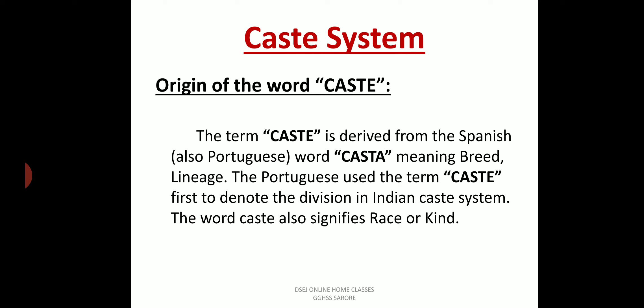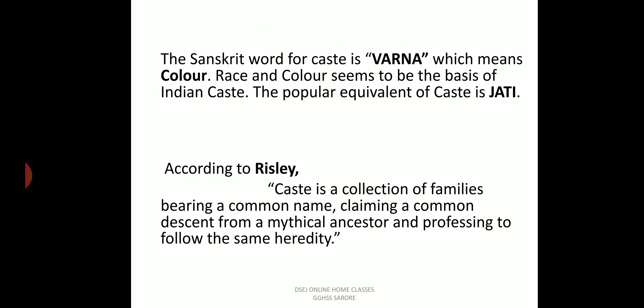The term 'caste' is derived from the Spanish word 'caste' meaning breed or lineage. The Portuguese used the term first to denote the divisions in the Indian caste system. The word 'caste' also signifies race or kind. The caste system is divided into four categories: Brahmins, Kshatriyas, Vaishyas, and Shudras.